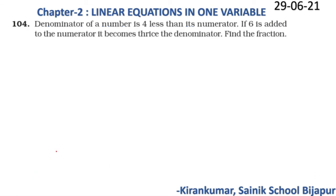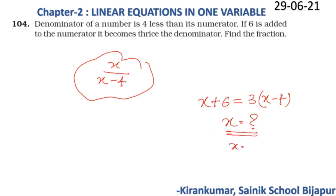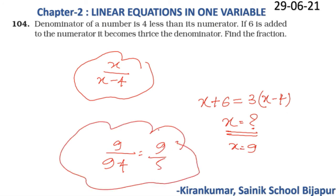Question 104: The denominator of a fraction is 4 less than its numerator. If the numerator is x, the denominator is (x − 4). If 6 is added to the numerator, it becomes thrice the denominator: x + 6 = 3(x − 4). Solving gives x = 9. So the fraction is 9/(9 − 4) = 9/5. Try this out.